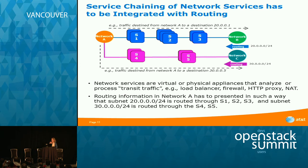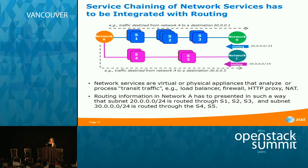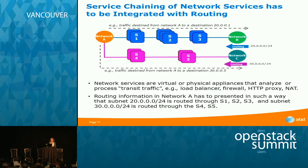Why are routing, dynamic routing, and distributed routing so important for service chaining? Here's a simple example: two service chains going from network A to B, with traffic flowing through appliances S1, S2, and S3 — some with multiple instances; S3 could have tens to hundreds. On the other service chain there are different appliances. The key point is that network A must know how to reach the prefixes in network B, and the same for networks C and B.